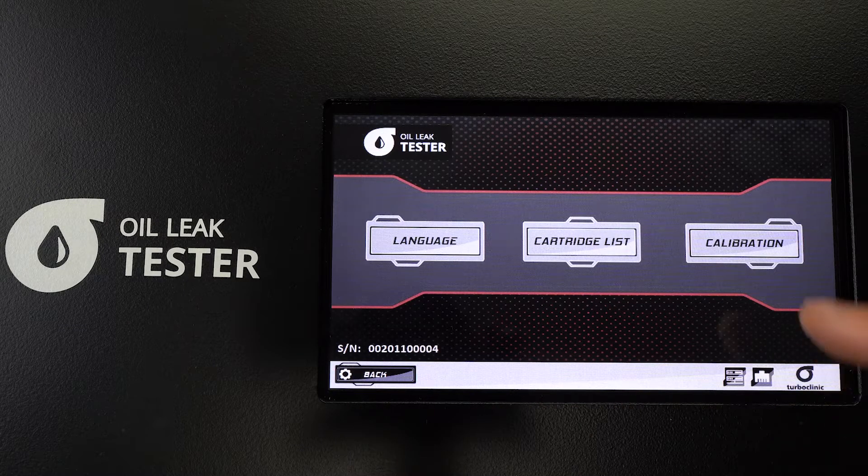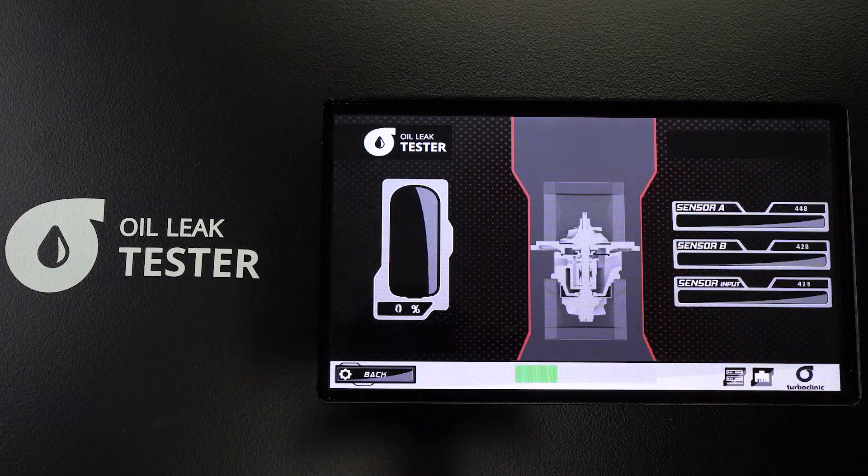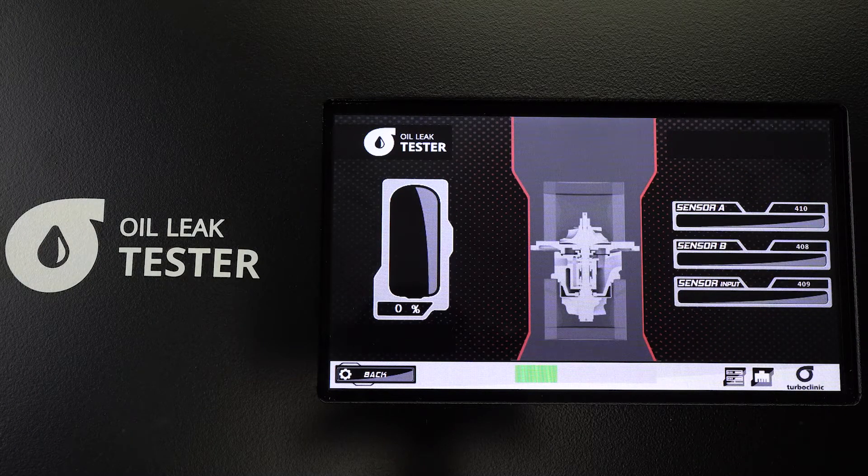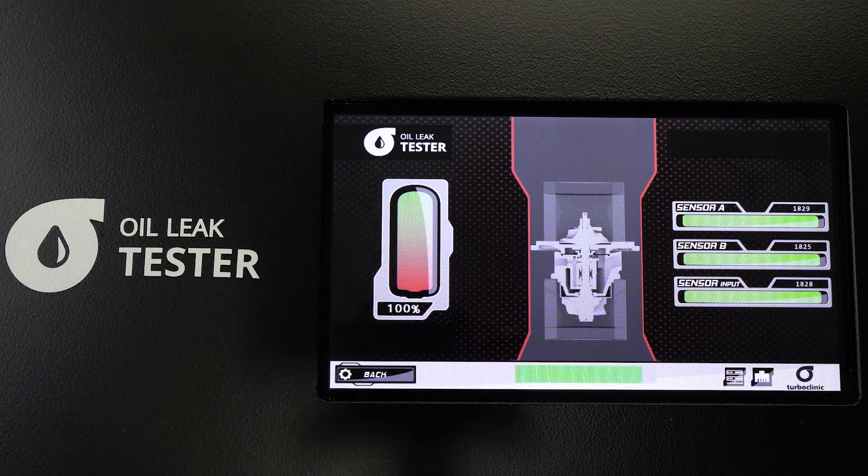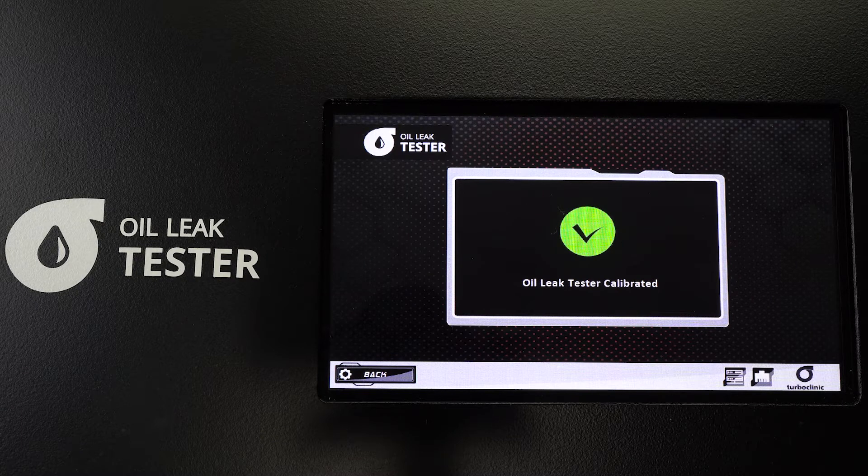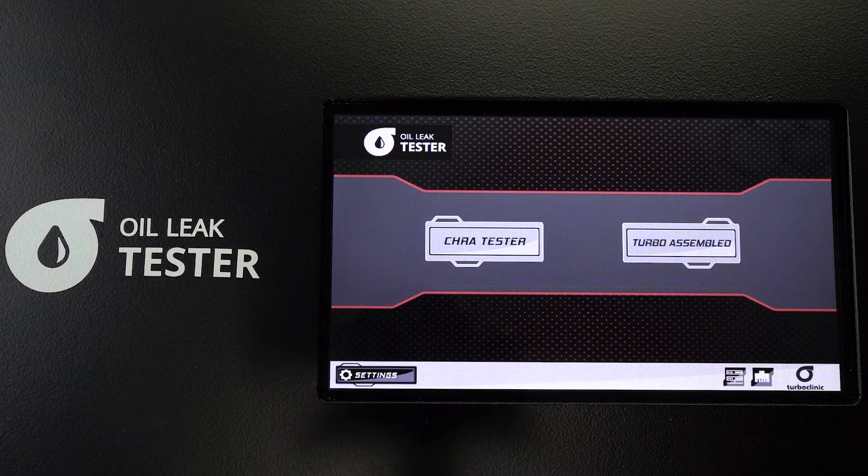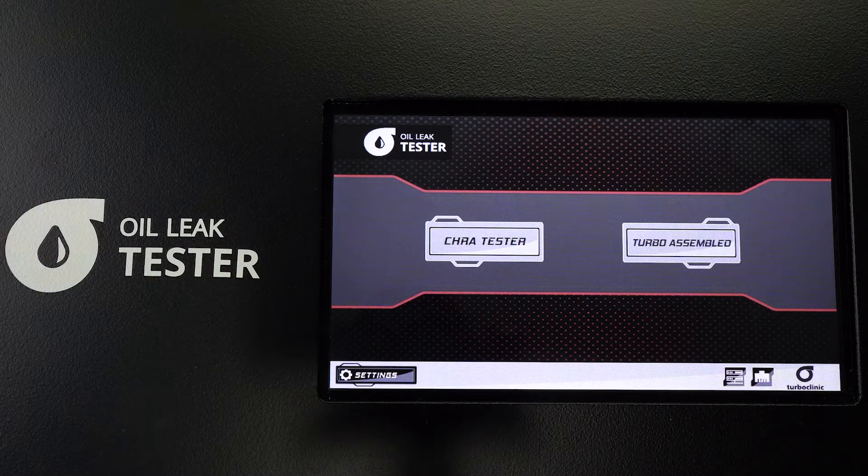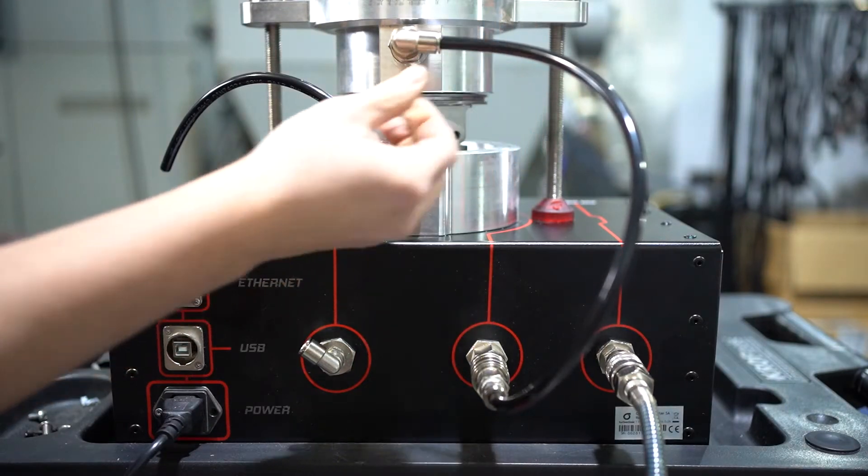After selecting settings, you can go to Calibration and start the test. This will automatically calibrate the Oil Leak Tester. Now you can change the air connections back so you can proceed to the next test.